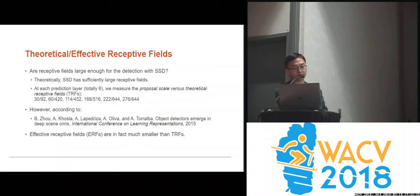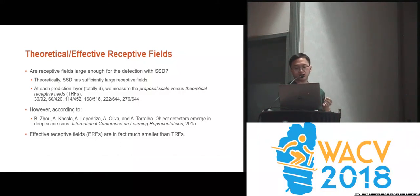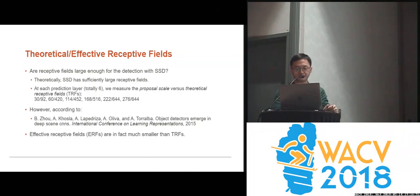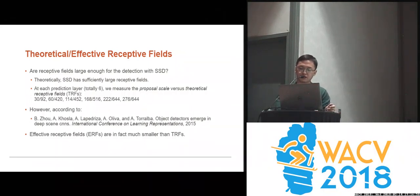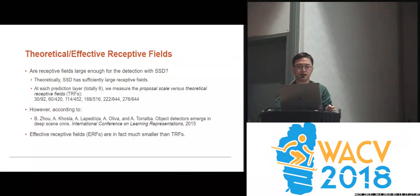In this paper, we firstly asked this question. Taking a VGG-16 backbone network as an example, are those receptive field sizes large enough for object detection with SSD? Theoretically, SSD has sufficiently large receptive field sizes. At each of the six prediction layers in SSD, we calculated the theoretical receptive field sizes versus the proposal scales. We found that the theoretical receptive field (TRF) sizes in SSD are sufficiently large, covering the whole area of the possible proposals, as shown by the six pairs of numbers we computed.